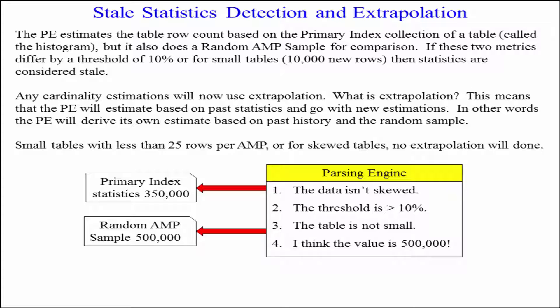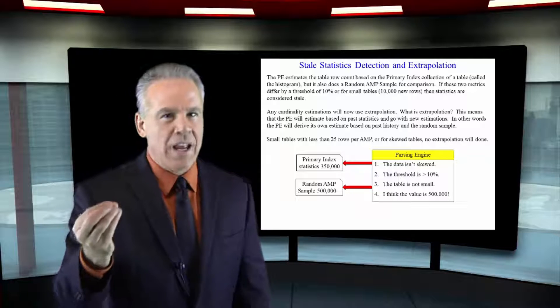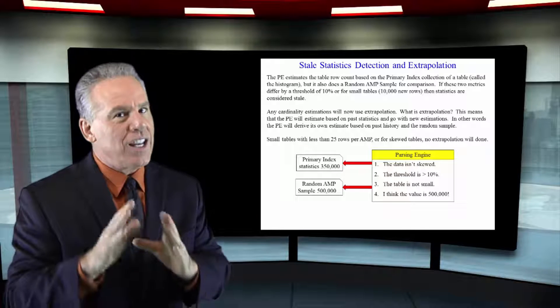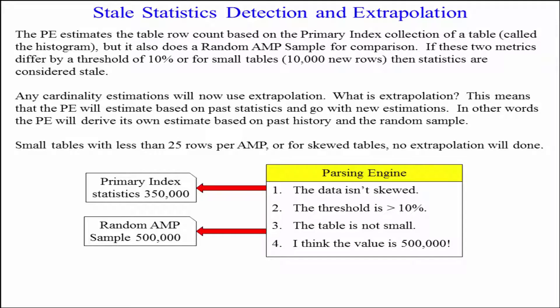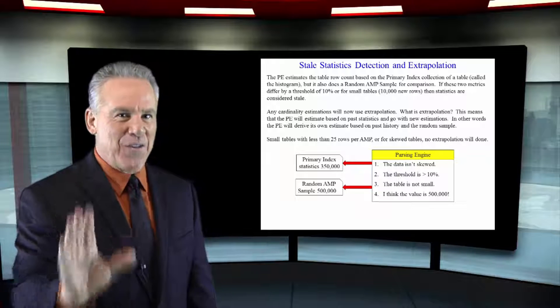Extrapolation is an amazing thing. You may run a query that's in the future and it's going to come back with estimates. How could it possibly do that? Well, we know that the orders have grown by about 10% each month. You've asked for these three months — it thinks it's going to be this much plus 10%. It can actually extrapolate what it thinks is going to happen in the future.